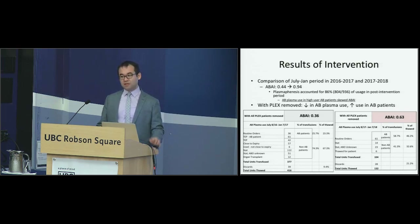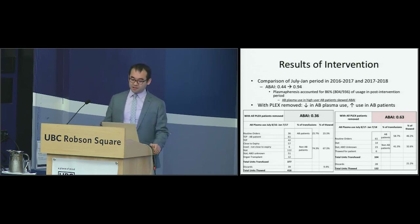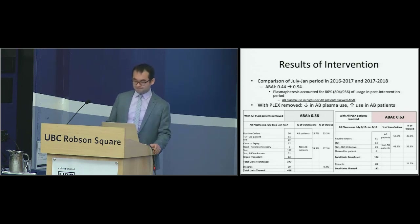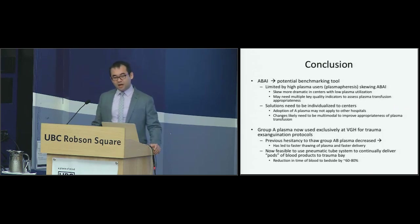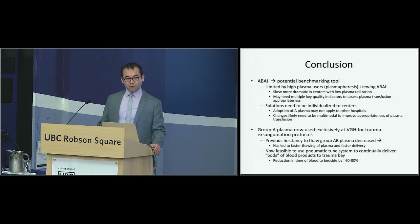We decided to remove plasmapheresis from the results and found that overall there was a decrease in use of AB Plasma in general: total units transfused went from 377 to 104, and total units thawed went from 416 to 132. We also found increased appropriateness of use in AB patients — our ABAI went from 0.36 to 0.63. In conclusion, the ABAI is a potential benchmarking tool that still needs some refinement. It is limited by high plasma users such as plasmapheresis skewing the results, and it requires multiple key quality indicators to assess plasma transfusion appropriateness.